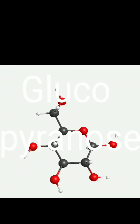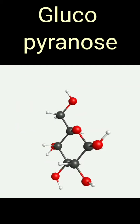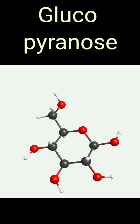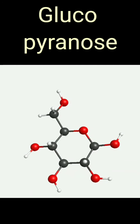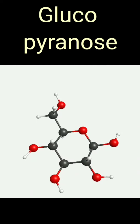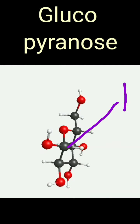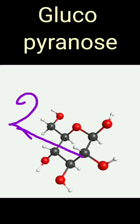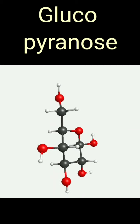यह glucose का glucopyranose structure है — 6-membered ring structure है। Carbon number 1 के configuration को देखने के लिए हमें oxygen को ऊपर और carbon number 2 को नीचे की तरफ orient करना होगा और उनकी 2 valencies को towards ourselves रखके देखना होगा। तब हम देखते हैं कि OH group left side पे है और hydrogen right side पे है। Next, carbon number 2 पे OH right side, hydrogen left side। फिर carbon number 3 पे OH left side।